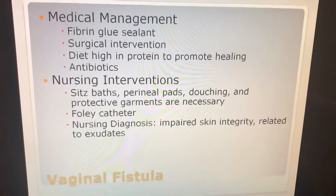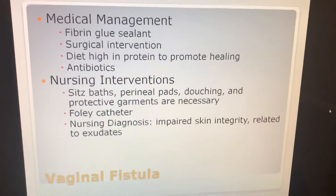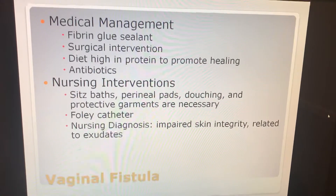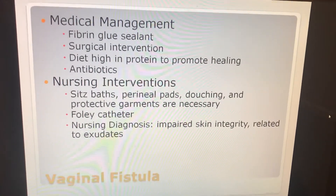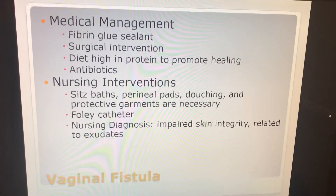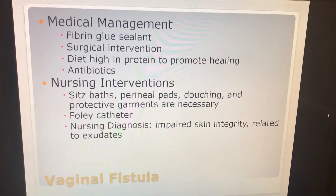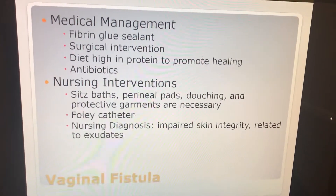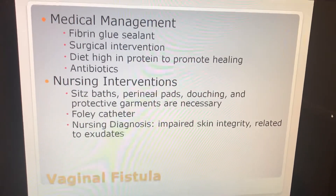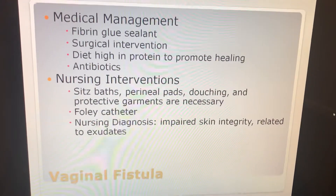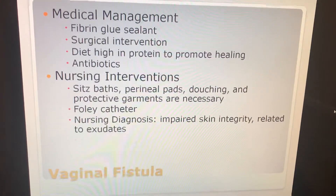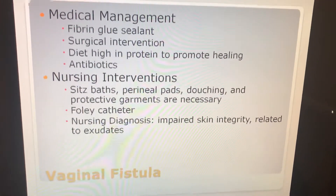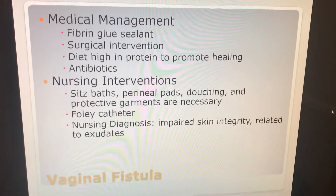Nursing interventions include sitz baths, perineal pads, douching, and protective garments. A Foley catheter may be in place. The nursing diagnosis for this is impaired skin integrity related to exudates. And that is your vaginal fistula.